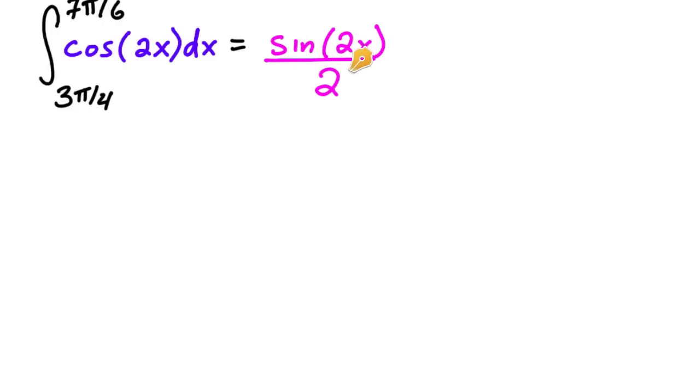Because when you get the derivative of this one, you would have to use the chain rule. So you got to be careful with that one. And remember, when you find the antiderivative, you can always test to make sure you got the right answer.